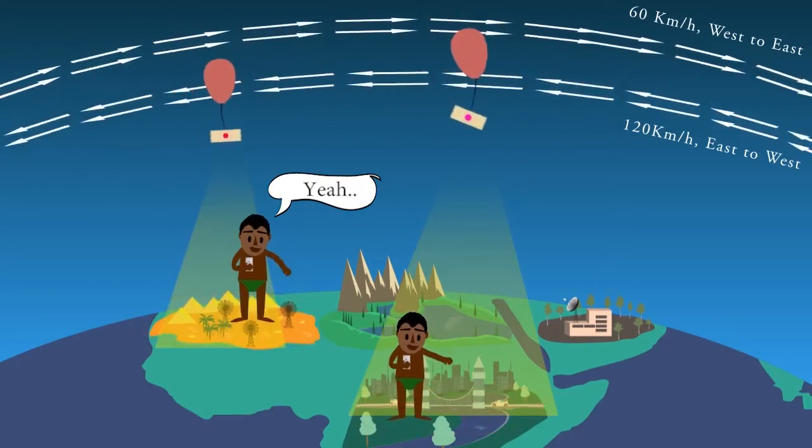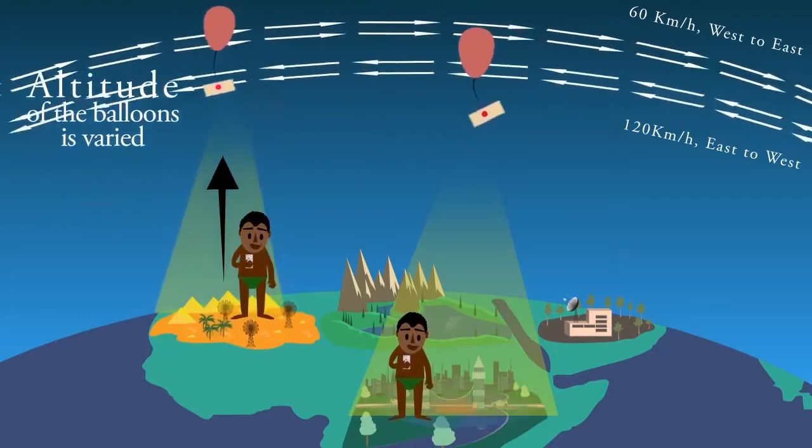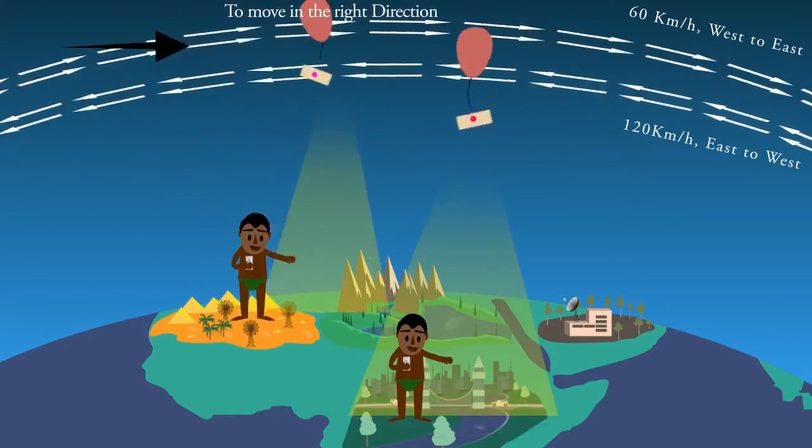Software algorithms determine where the balloons need to go, then altitude of the balloons is varied to move each one into a layer of wind blowing in the right direction.